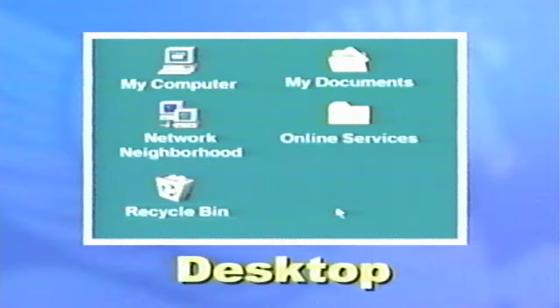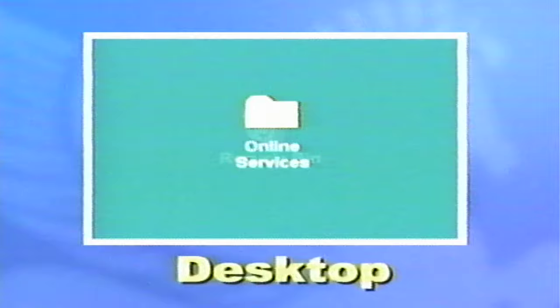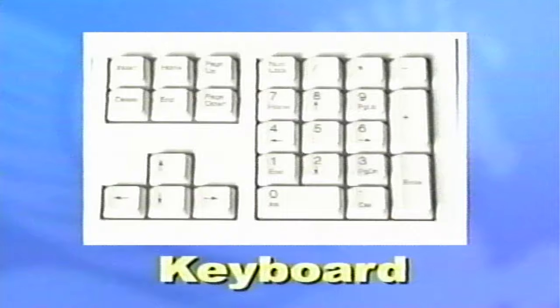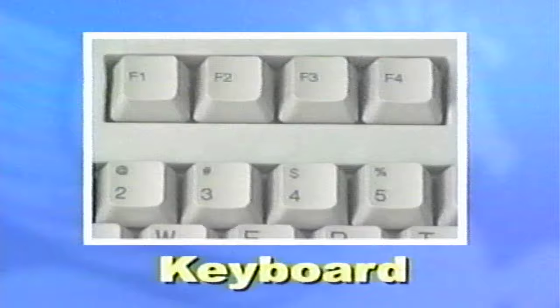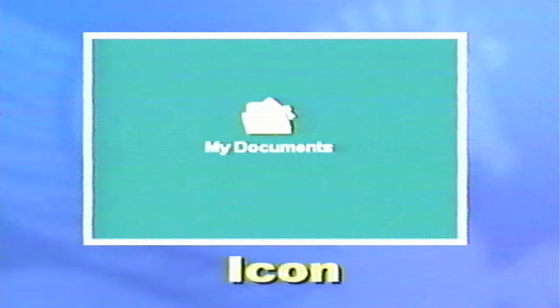The desktop is what you see when you start your computer — it's an easy way to move around and get access to your projects. Just like a real desktop, you'll find things like files, folders, and also a recycle bin which resembles a trash can. The keyboard is exactly like a typewriter keyboard, with great additions like a number pad, arrow keys, and function keys that help you move around your screen. Icons are pictures that look like the task they perform — you store documents in an icon that looks like a folder, and you get email through an icon that looks like a letter.